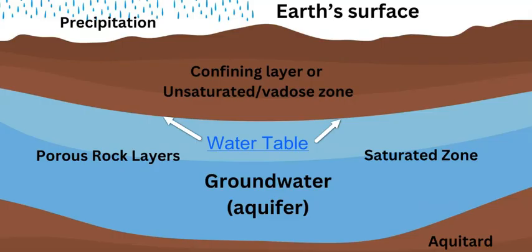As an overview: groundwater originates from meteoric water — precipitation from the atmosphere — that falls on the Earth's surface. The portion that infiltrates and percolates through the soil into the bedrock accumulates in porous rock layers, filling voids and cavities to create groundwater — the saturated zone. Above this is the water table, then the unsaturated or vadose zone up to the surface. Confining beds called aquitards, which are non-porous, prevent water from transmitting through them. A large volume of accessible groundwater is called an aquifer, accessed via wells.